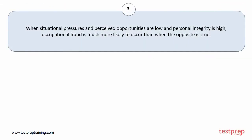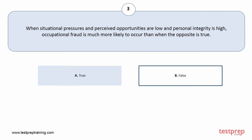Question number 3. When situational pressures and perceived opportunities are low and personal integrity is high, occupational fraud is much more likely to occur than when the opposite is true. Your options are A. True, B. False. The correct answer is option B.